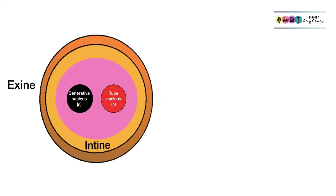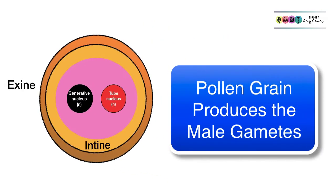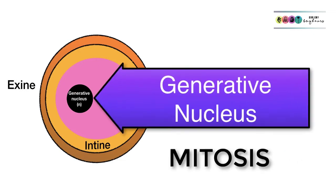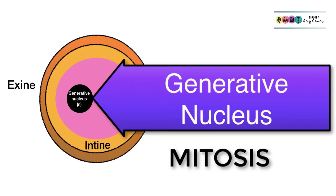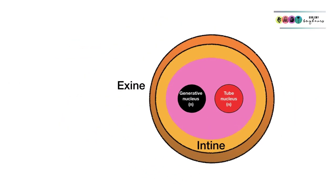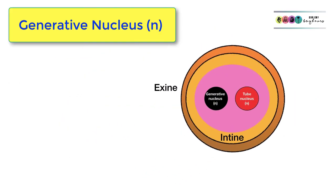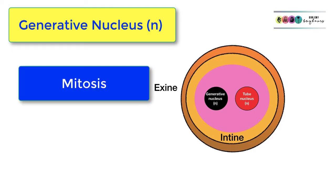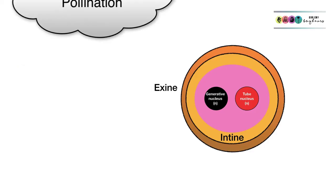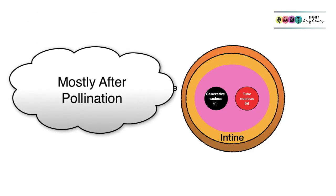So this is the pollen grain, but remember we still do not have those male gametes. They will be produced by this pollen grain, specifically by the generative nucleus because it will undergo mitosis to give rise to two male gamete nuclei. So remember the male gametes will be formed when that generative nucleus undergoes mitosis to give rise to two male gamete nuclei and this can happen before pollination but mostly afterwards.